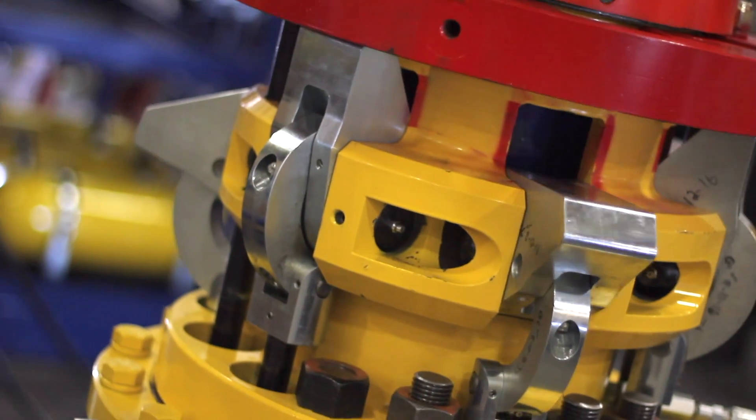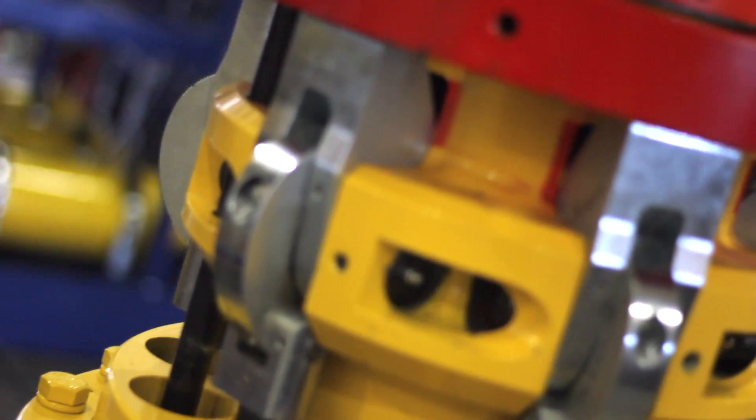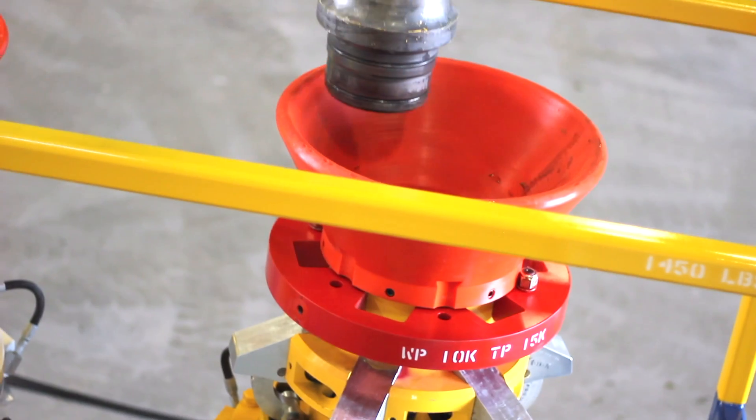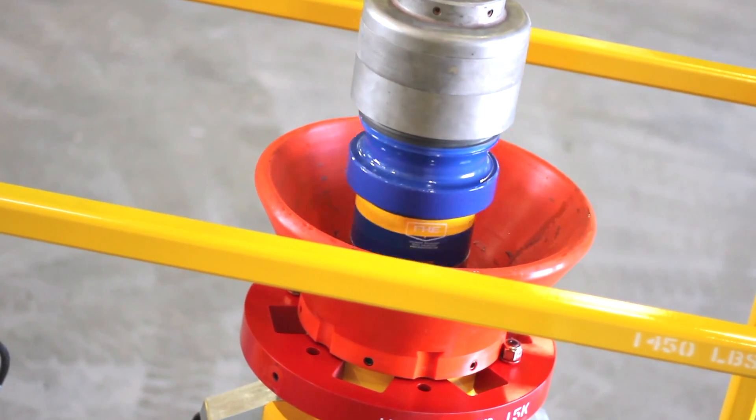Operators engage the locking system from the remote custom designed control unit instead of struggling to make the connection by hand directly under the equipment string. Many injuries have happened during this routine procedure. The Rig Lock protects against these costly accidents.